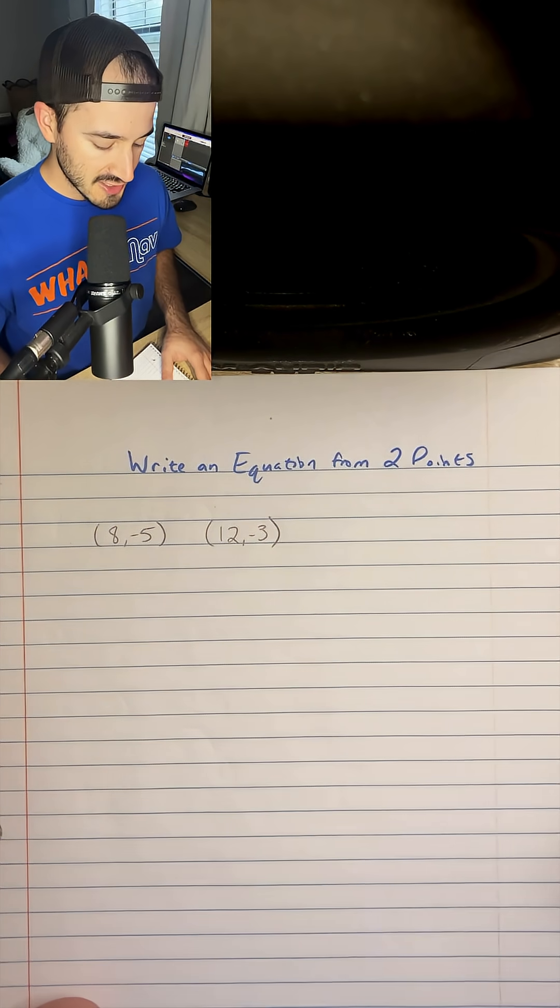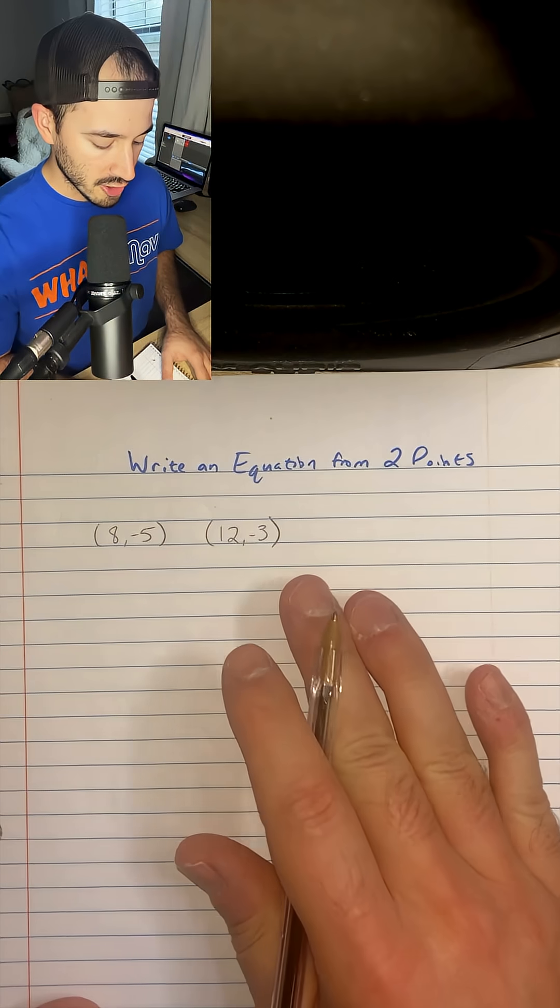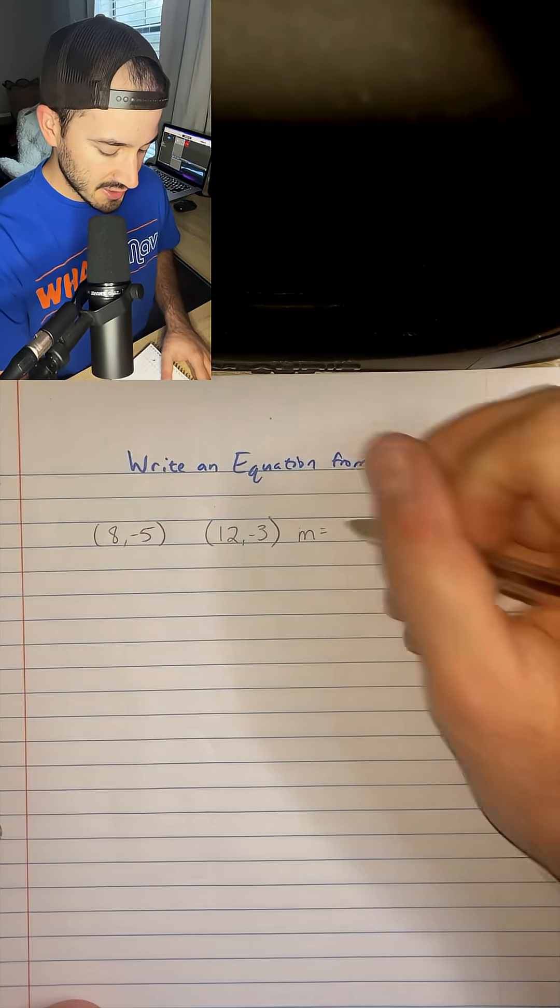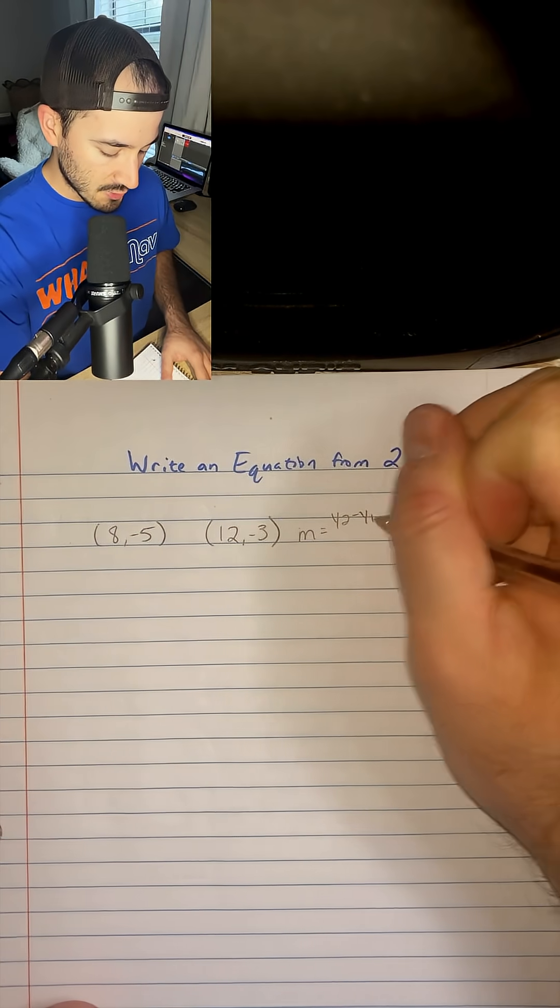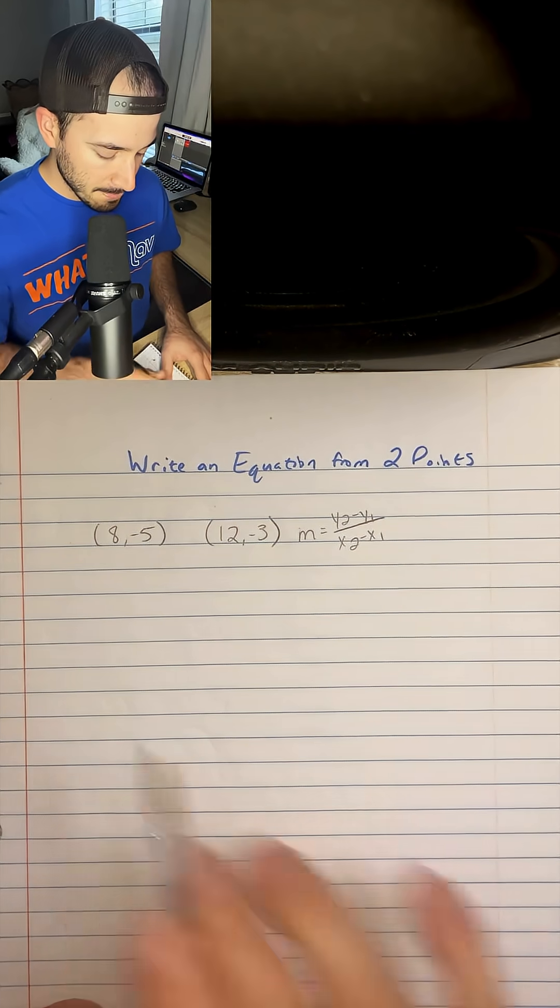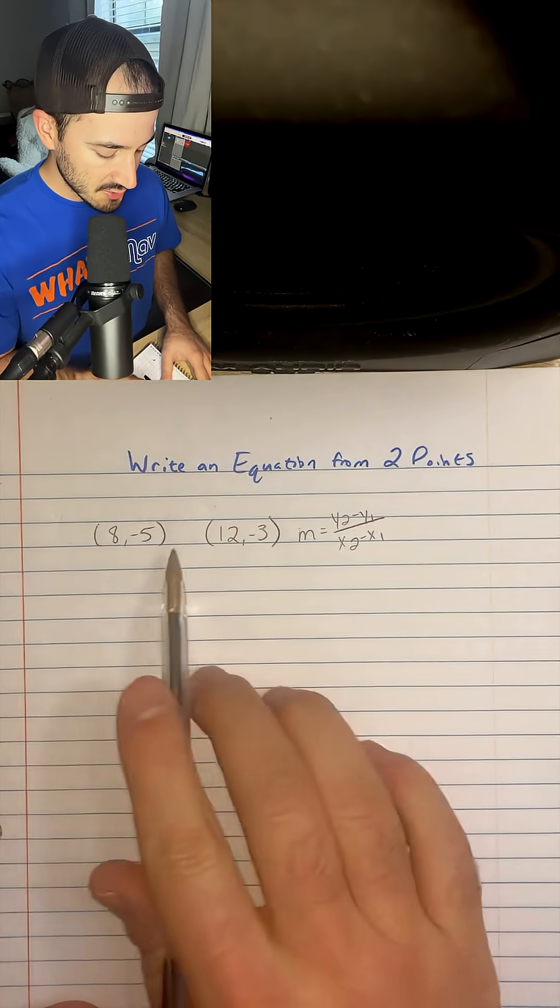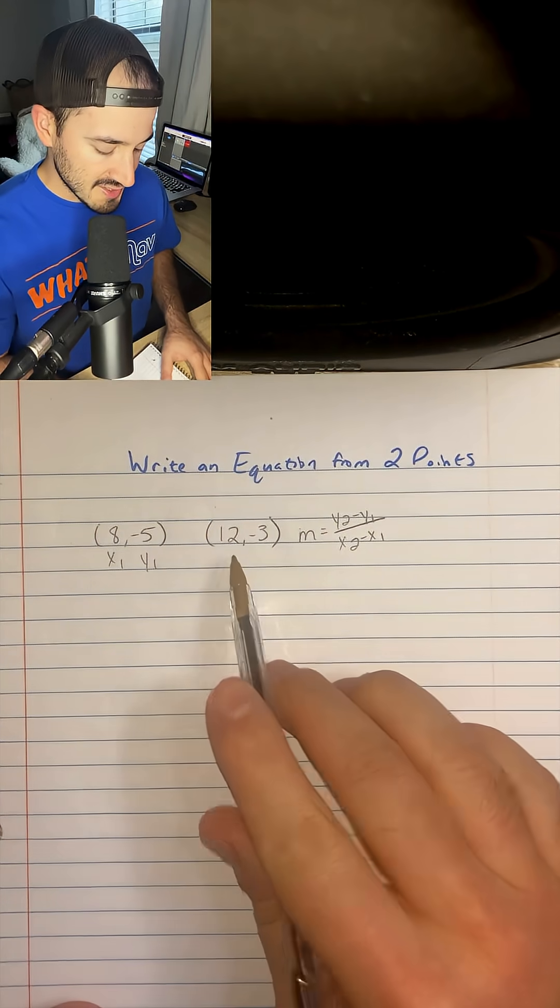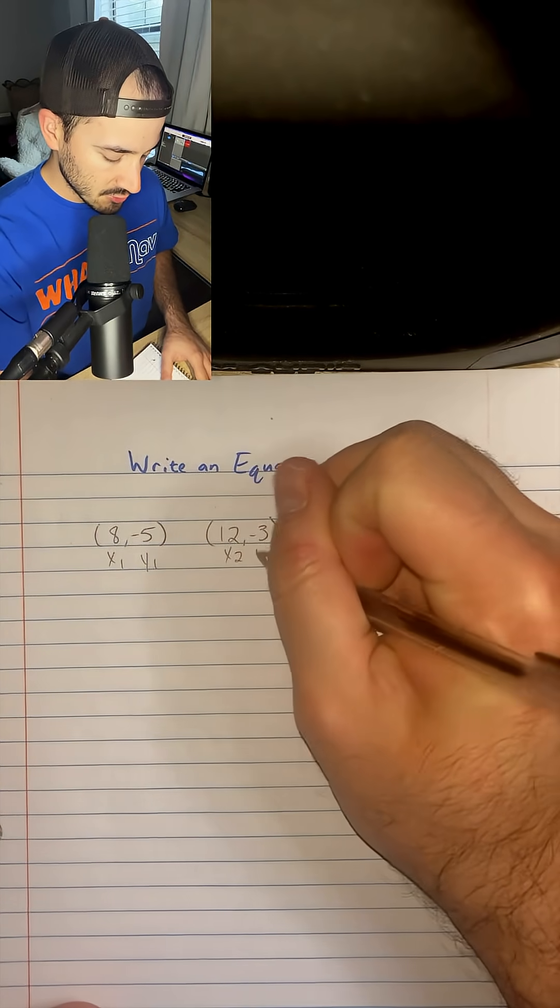And so the first thing that we're going to do in order to get our equation is we're going to find the slope. The slope formula is m equals y2 minus y1 over x2 minus x1. So I'm just going to use the first point and let it be x1, y1, and my second point will be x2, y2.